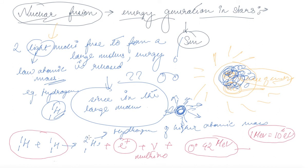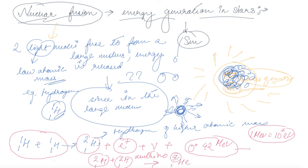After this reaction, this hydrogen of high atomic mass — 2H1 — again gets fused with another hydrogen of high atomic mass to give rise to a helium atom, that is He-3, along with the release of a neutron plus energy of 3.27 MeV.